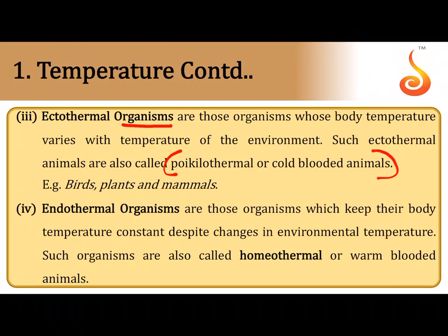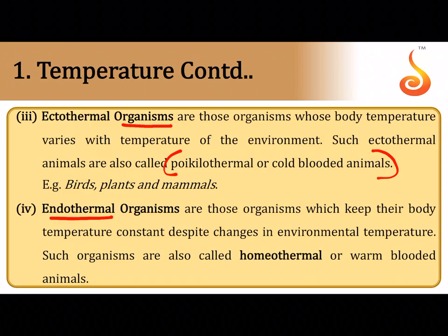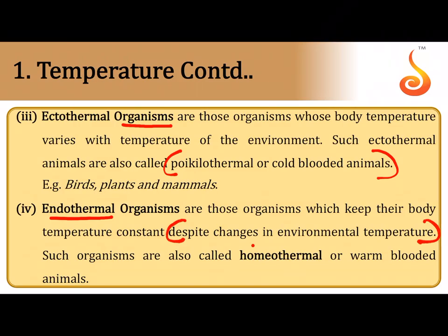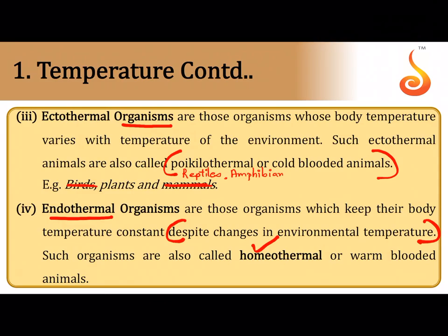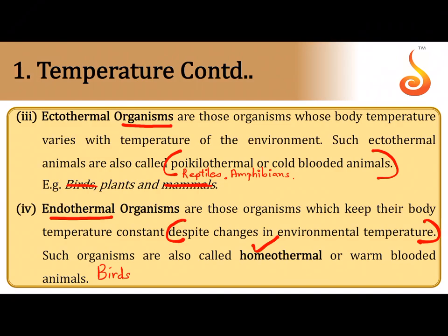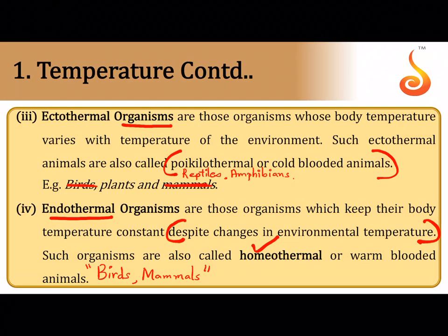Ectothermal organisms have a body temperature that depends upon the surrounding environment — they are called poikilothermal animals. Reptiles, fishes, and amphibians are ectothermal. Endothermal organisms have an inbuilt temperature control mechanism — for example, the hypothalamus helps in regulating our temperature. When the body can maintain its own temperature irrespective of the surrounding environmental temperature, they are called homeothermal or warm-blooded animals. Both birds and mammals are endothermal.